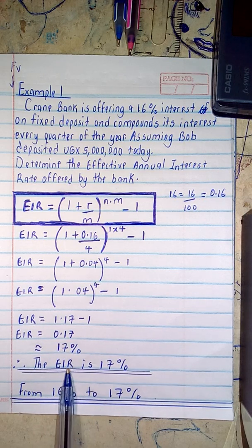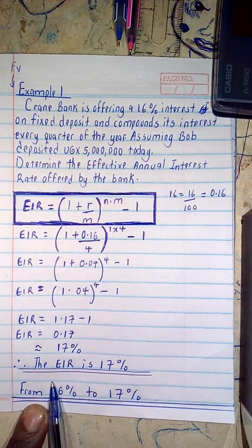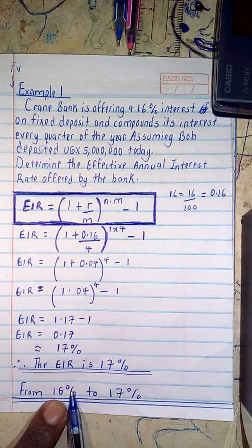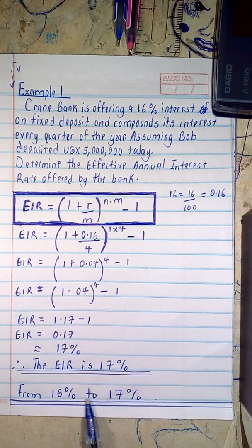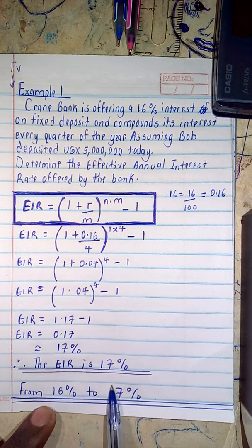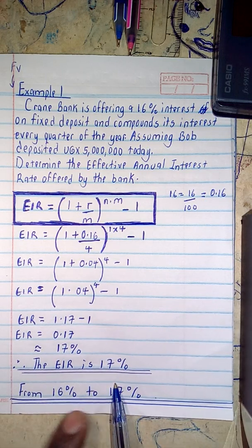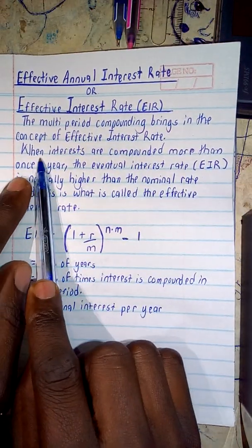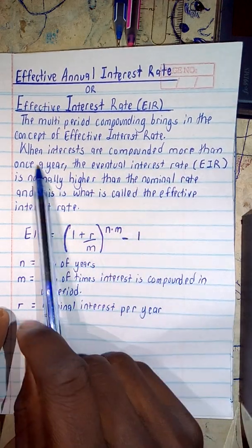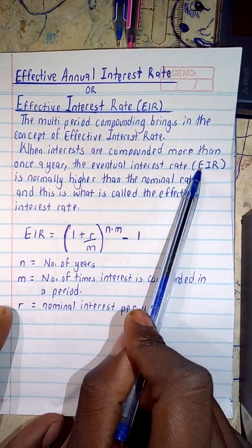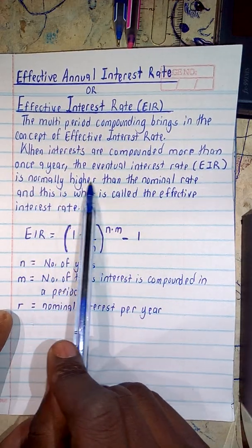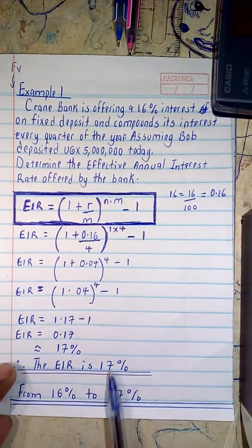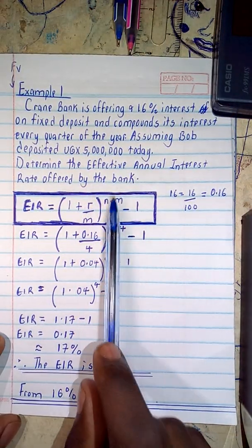Therefore, the EIR is approximately 17%. This demonstrates the earlier point: when interest is compounded more than once a year, the effective interest rate is higher than the nominal rate — shifting from 16% (nominal) to 17% (effective).